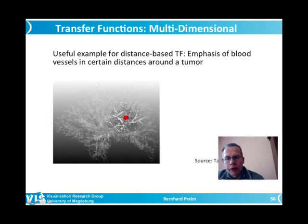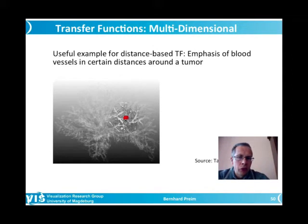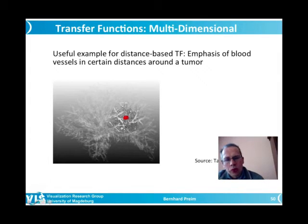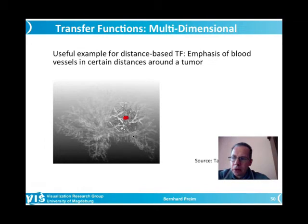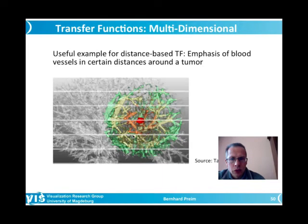The more useful example involves the vasculature of the liver: a tumor is segmented, a distance volume is computed telling every voxel how far it is from the tumor, and this is used to increase opacity for vessels within a certain margin — say 10 millimeters — around the tumor. This is almost a smart visibility technique, preferring visibility of structures close to the target structure while reducing visibility of others. A distance-based transfer function can be applied not only to opacity but also to colors.